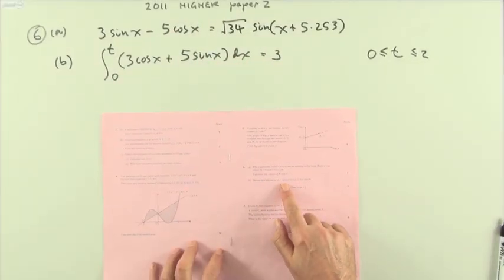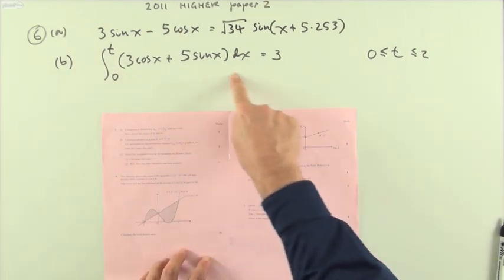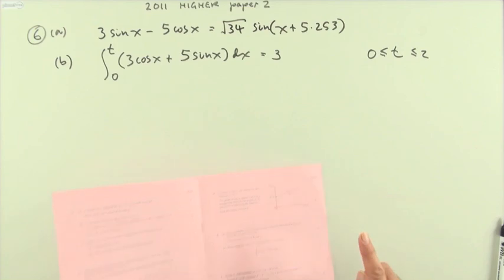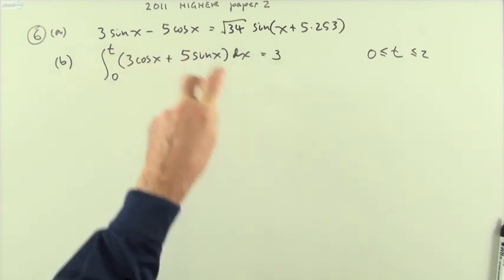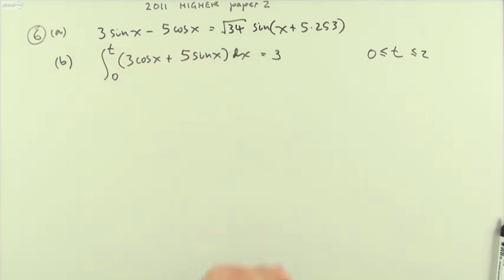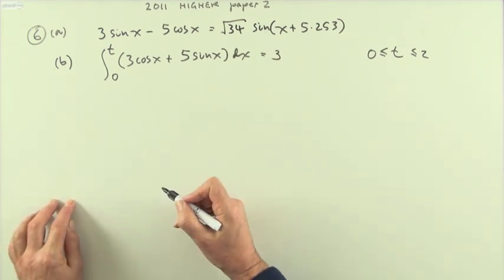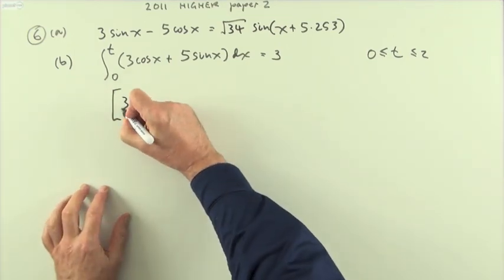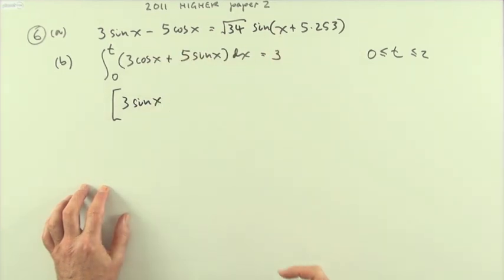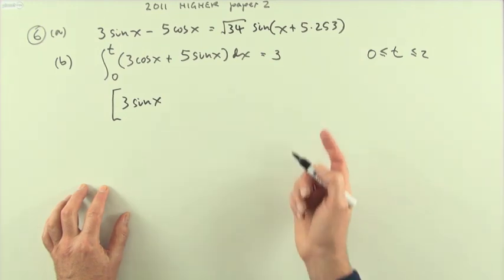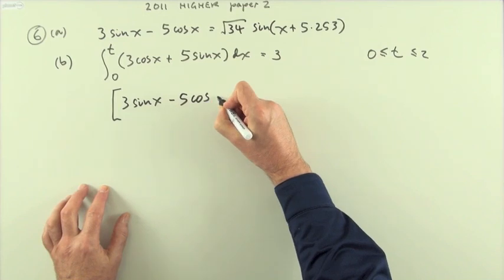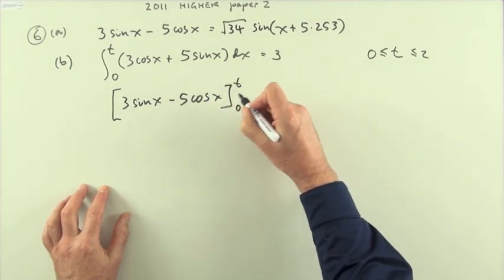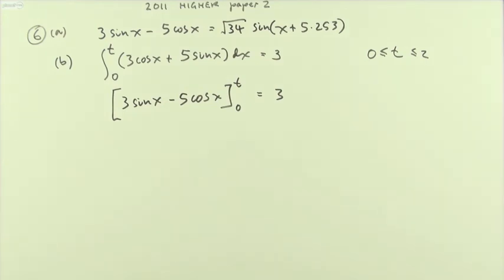The second part: hence find the value of t in the integral such that its value equals three — worth seven marks. Integrate the expression: the integral of 3 cos x is 3 sin x, and the integral of negative 5 sin x is negative 5 cos x (since cosine produces a negative sine). Evaluate between zero and t, and the difference equals three.